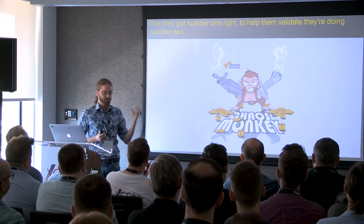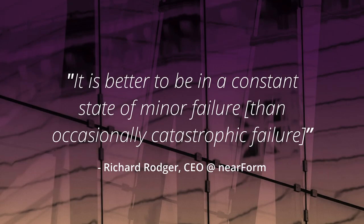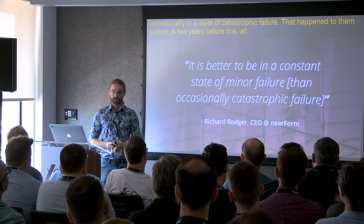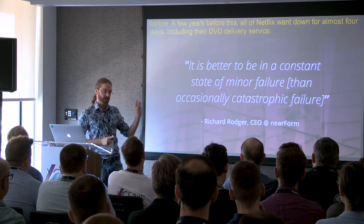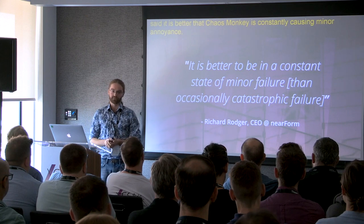If you've heard of chaos engineering, you've probably heard of Chaos Monkey. What Chaos Monkey does is it looks at Netflix's production cluster, looks at all of their microservices, and starts turning them off randomly. They run this nine to five, in office hours. Whenever there are Netflix engineers in the building, they are running Chaos Monkey, randomly killing services. This is a business decision they made—that it's better to be in a constant state of minor failure than very occasionally in a state of catastrophic failure. That had happened to them before—a few years before, all of Netflix went down for almost four days, including their DVD delivery service. They said it's better that Chaos Monkey is constantly causing minor annoyance rather than occasionally very publicly failing in a really big way.